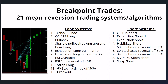This video is going to be about our 21 mean reversion systems. The systems that look for longs: trend pullback, QEBTS pullback, shallow pullback, strong uptrend — your market's in a very strong uptrend, you get a pullback where indicators like CCI or RSI get a little oversold, and you're looking for a bounce. Bear long is a long condition that occurs in bear markets primarily, which we're not in at the moment — we had a lot of those trades last year. Exhaustion bull is a long that occurs in a bull market after a big sell-off, maybe after a 10–20% correction.